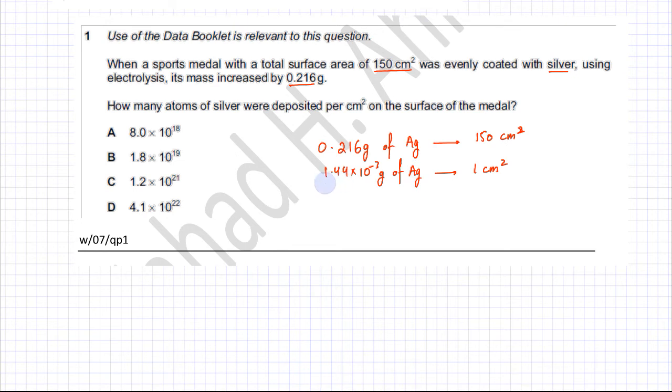The next thing we need to do is find the moles of silver. Silver's atomic mass is 108. So we can find the moles by dividing the mass 1.44 into 10 raised power minus 3 divided by 108. Using the calculator, the answer is 1.33 rounded to three significant figures into 10 raised power minus 5 moles.